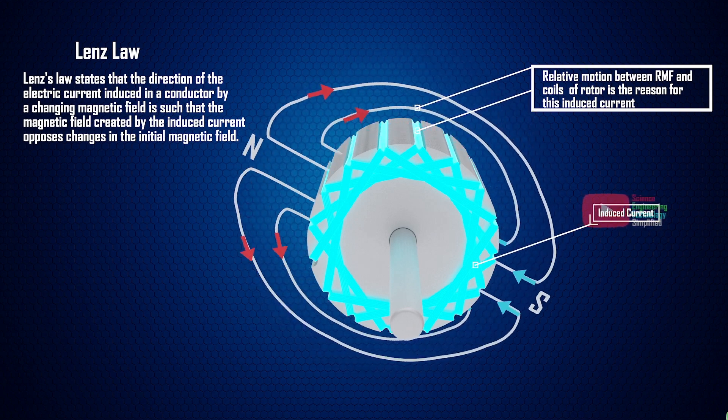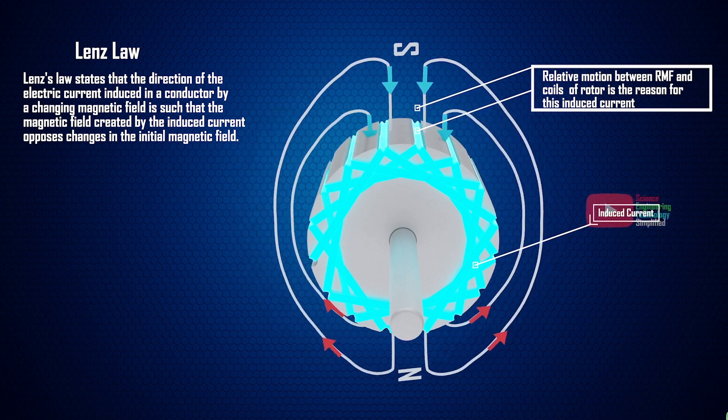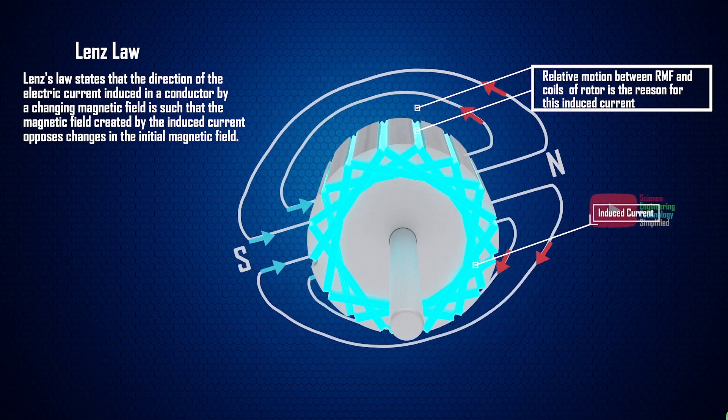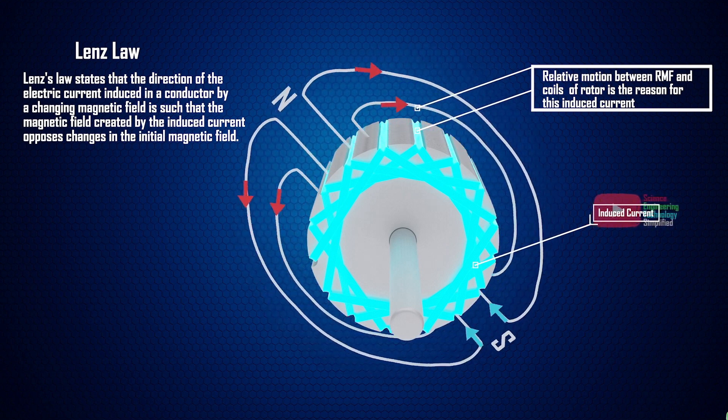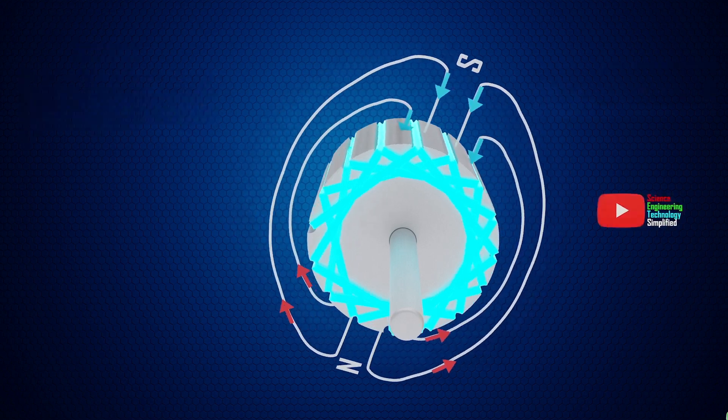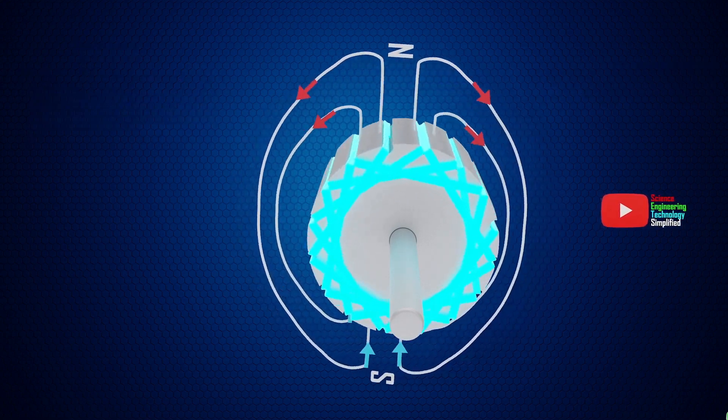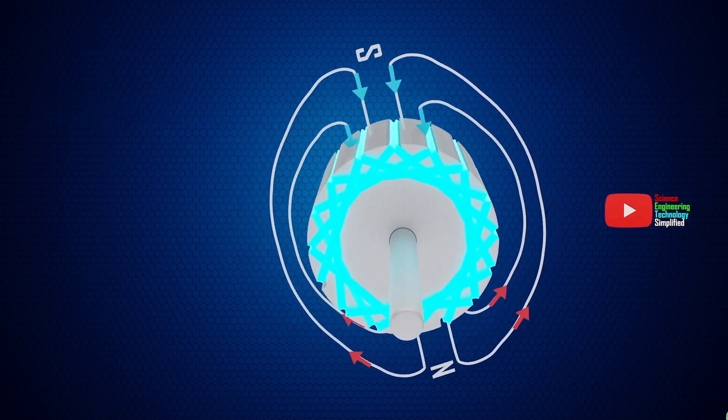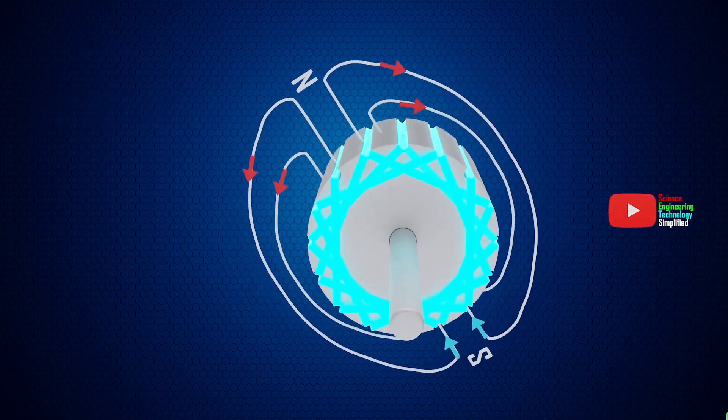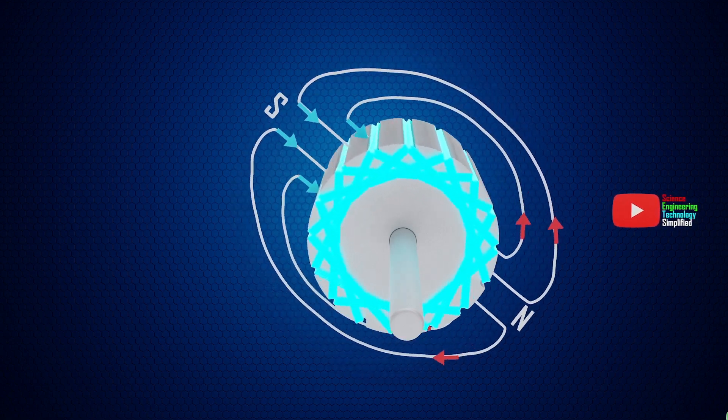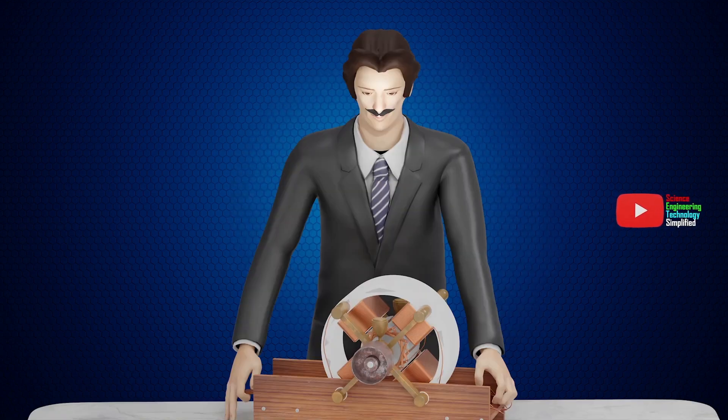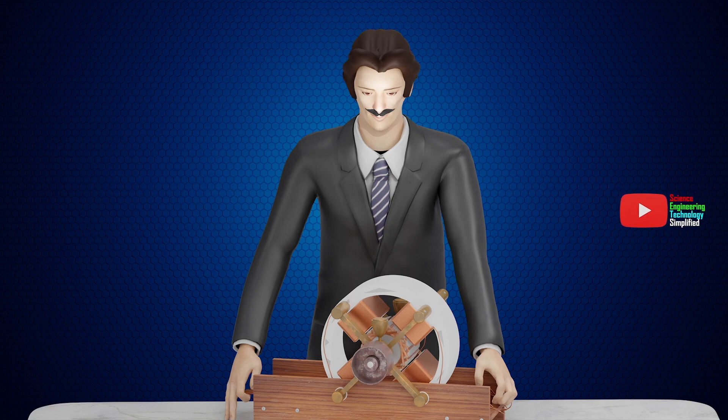The direction of this induced current will be such that it tries to decrease the relative motion between the rotor and the rotating magnetic field. Therefore, the rotor will start rotating with the magnetic field in order to decrease the relative motion. In this way, Nikola Tesla invented the induction motor.